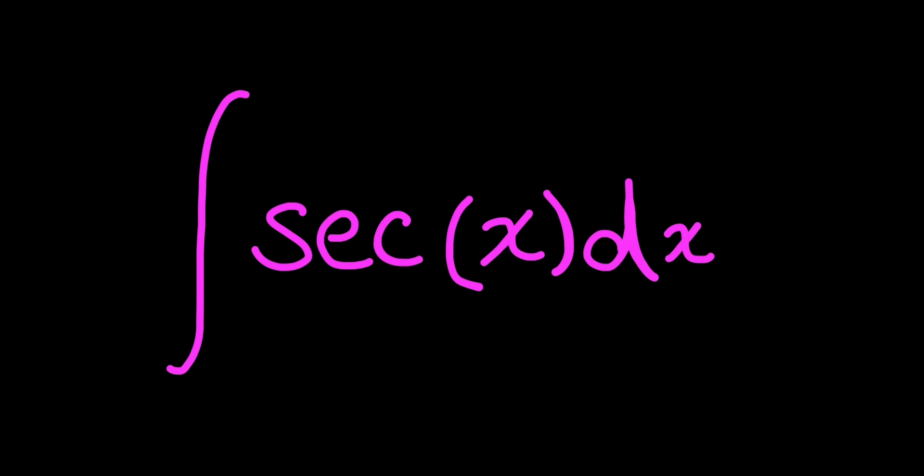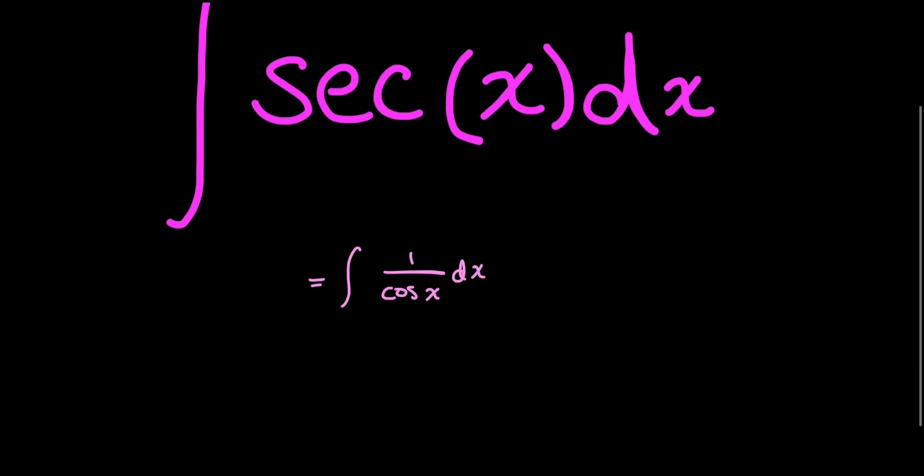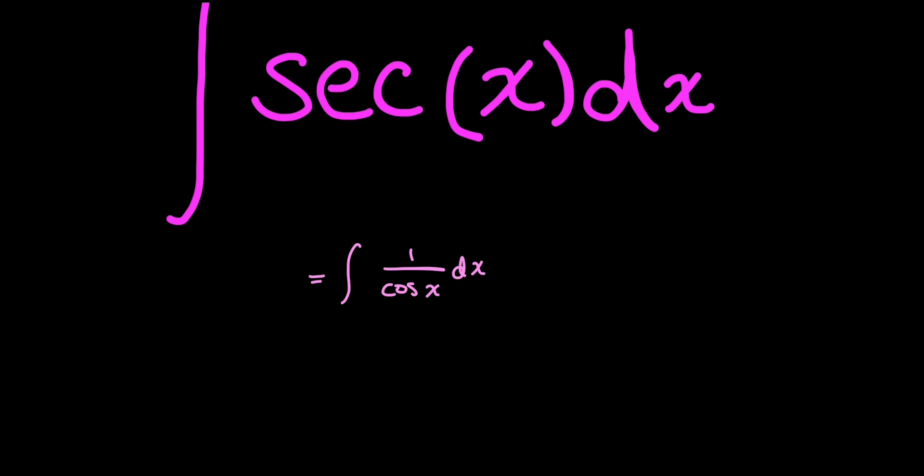So I'll start by using what my definition of secant x is. Secant is just 1 over cosine, so I can rewrite my integral as 1 over cosine x dx. Now this is still not super obvious how I can integrate this. So I'm going to multiply by a factor of cosine x in the numerator and the denominator. So this becomes integral of cosine x over cosine squared x dx.